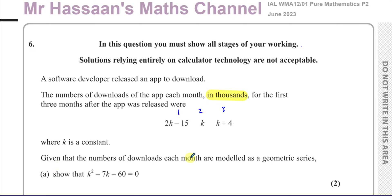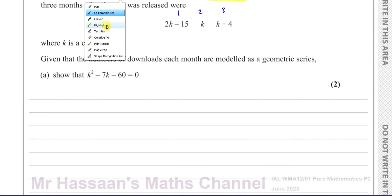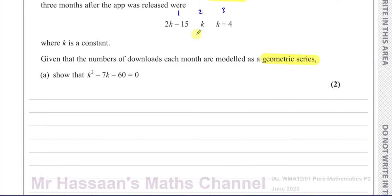For this part of the question we have a geometric series. A geometric series is one where you have a common ratio — to get from one term to the next, you multiply by the same ratio. To find the common ratio, you divide a term by the term before it. So dividing the third term by the second term gives the common ratio, and dividing the second term by the first term gives the same common ratio.